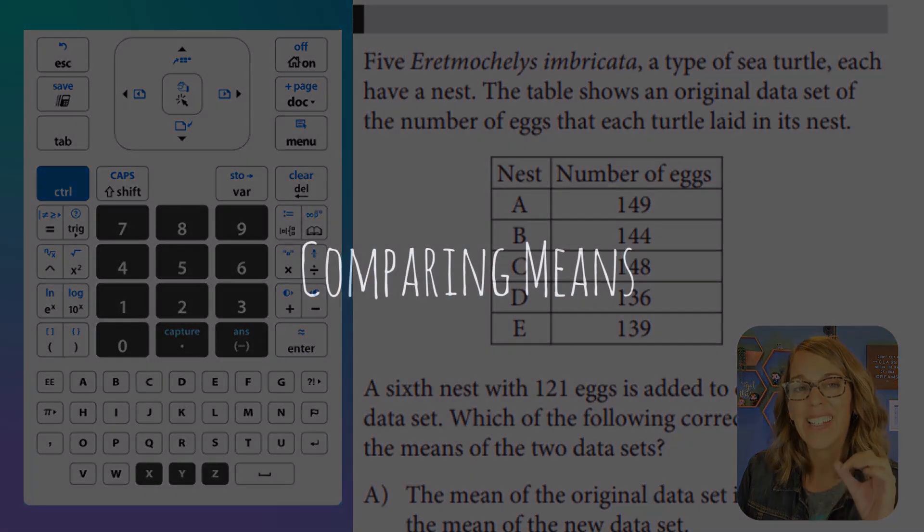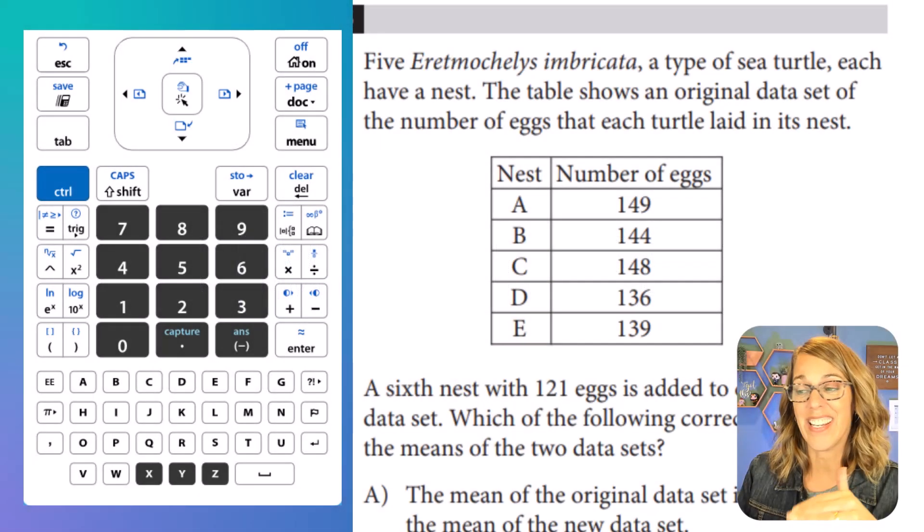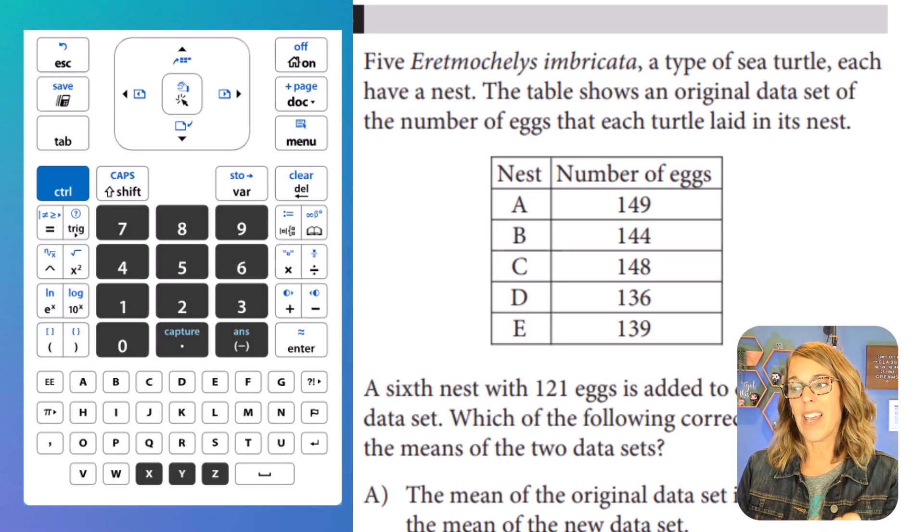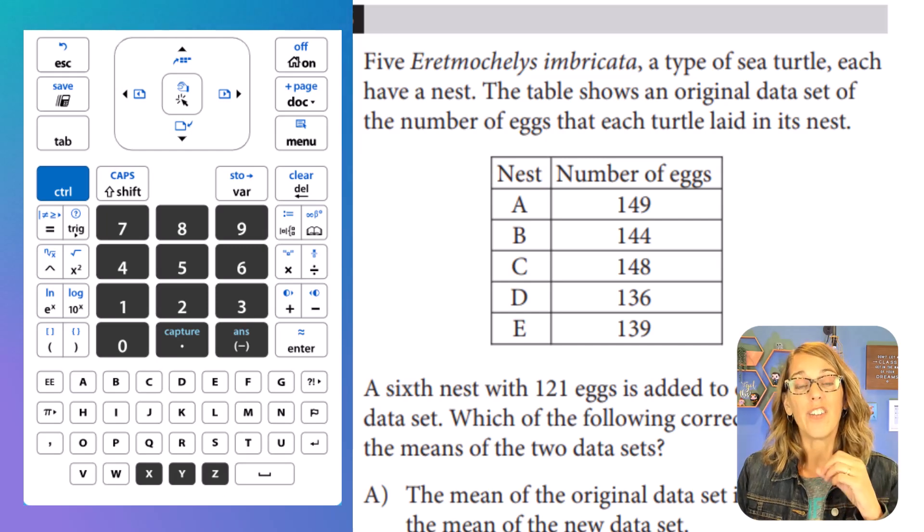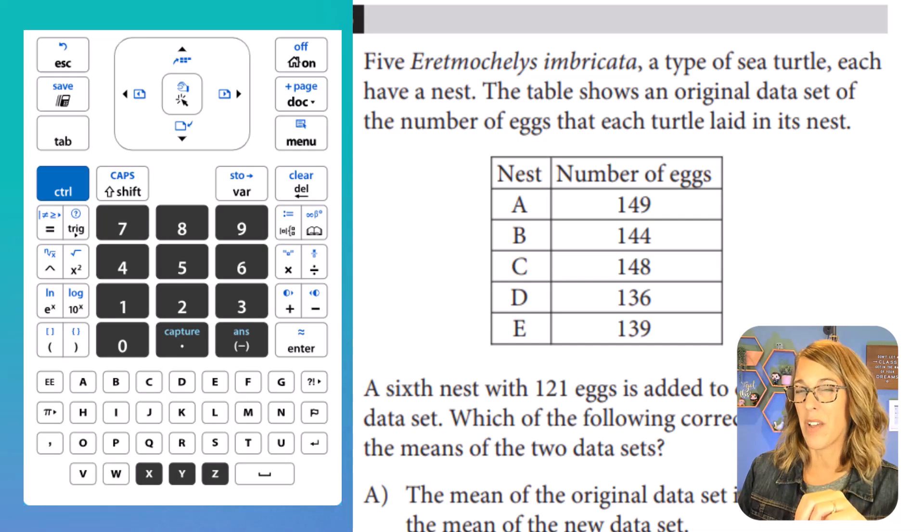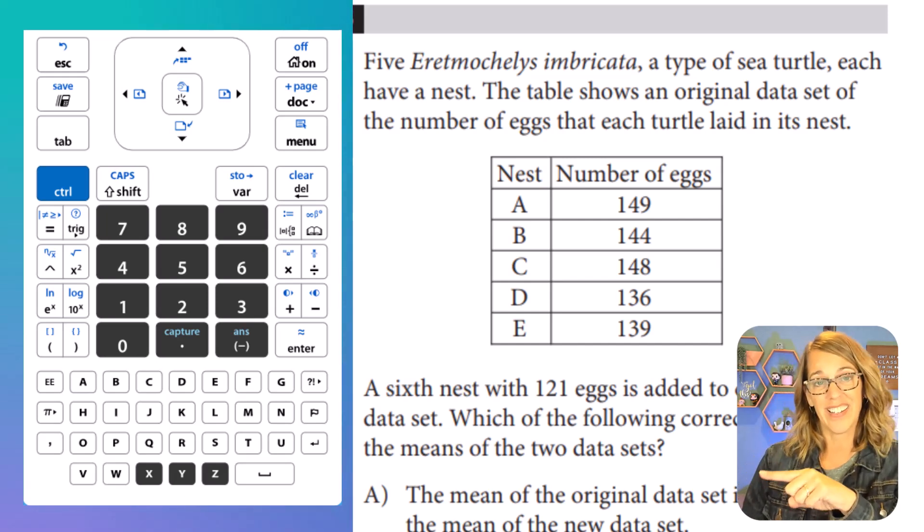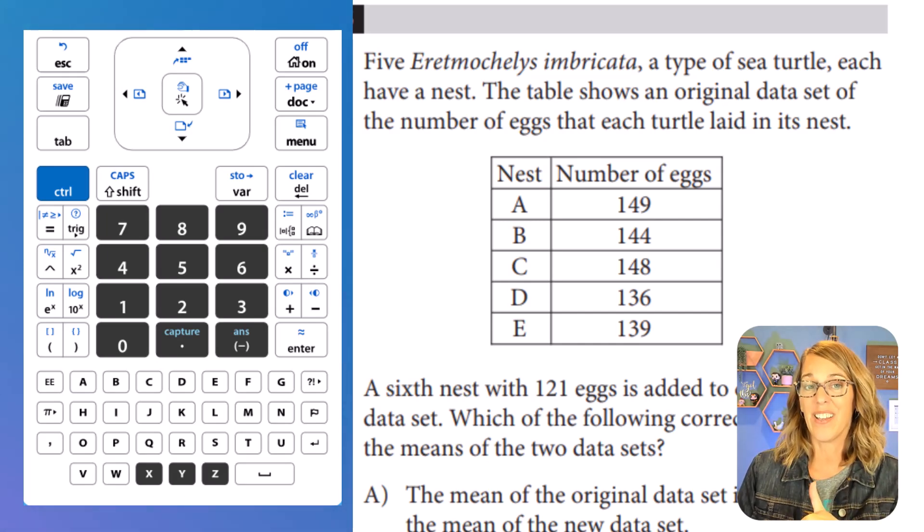Here's a second different example of a statistics question on the SAT. In this question, we're given an initial data set, a number of eggs, and then they're going to add a sixth nest with 121 eggs to create a new data set. So we're looking at two data sets. We're going to compare the means of the two. Okay, so I need the mean of the original data set, and I need the mean of this data set with 121 added in.